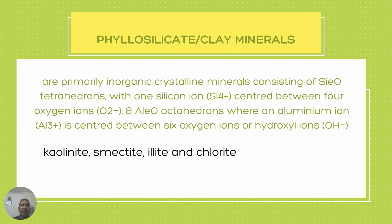Then come phyllosilicate or clay minerals. These are primarily inorganic crystalline minerals consisting of silicon oxide tetrahedrons with one silicon ion centered between four oxygen ions, and aluminium octahedrons where an aluminium ion is centered between six oxygen or hydroxyl ions. Examples include kaolinite, illite, chlorite, and smectite. Clay minerals are often locally available and cheap, so many researchers are using phyllosilicate or clay minerals.